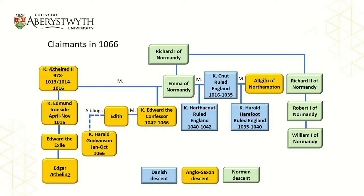William claimed the throne through his great grandfather, Richard I of Normandy, whose daughter Emma had been married to the Anglo-Saxon King Æthelred II. Emma had subsequently married King Knut of Denmark, who had invaded and won the English throne in 1016. But most importantly, Emma had been Edward the Confessor's mother, and it is through this line that William claims the throne.